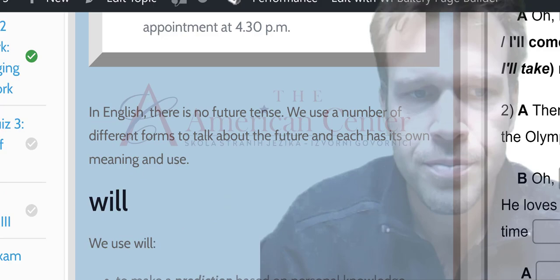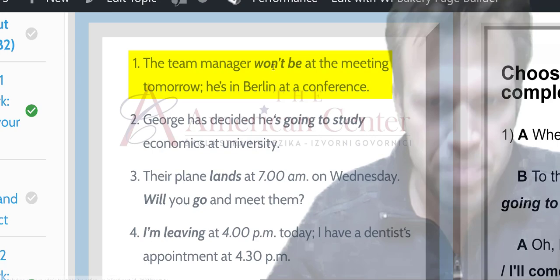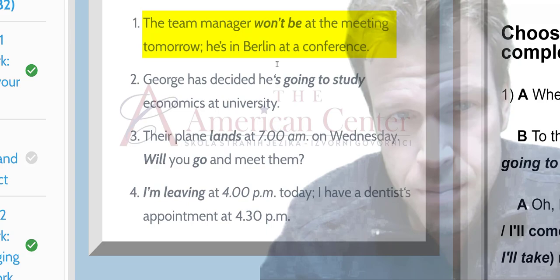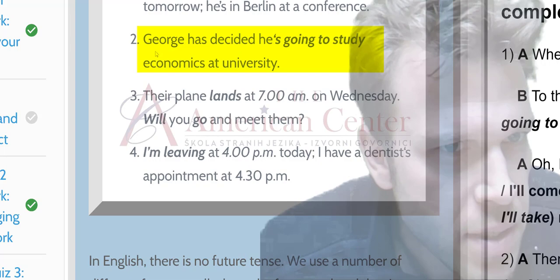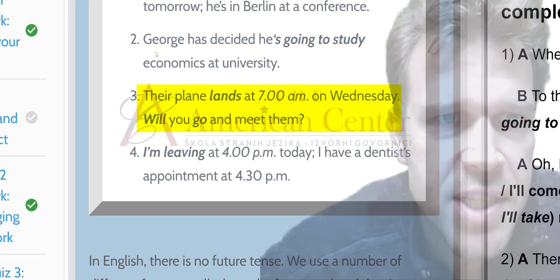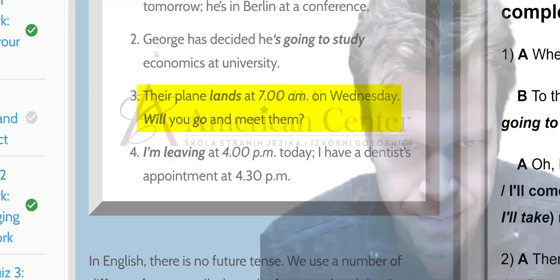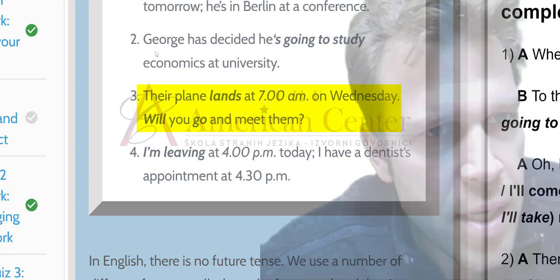Okay, now, let's just, okay, we see Will. Okay, and, okay, the team manager won't be at the meeting tomorrow. He's in Berlin. Okay, won't be. This is very strong, okay? This is a personal prediction, more or less. George has decided he's going to study economics at university. So, again, like we said, a decision has been made. Okay, not really certain when, but he has taken the step of deciding. Now, here at number three, we have a timetable. The plane lands at seven. And we're asking, will you go and meet them? Okay, we can use will as suggestion or proposal as well.